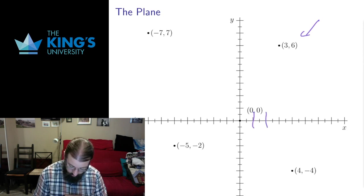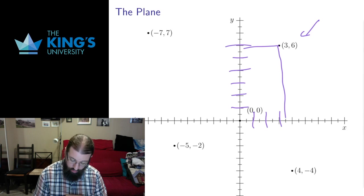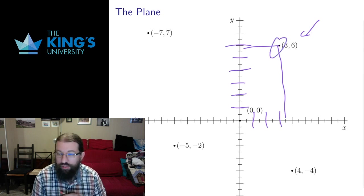If I go over 1, 2, 3, and go up 1, 2, 3, 4, 5, 6, I get the point that sits exactly 3 units over in x and 6 units up in y.